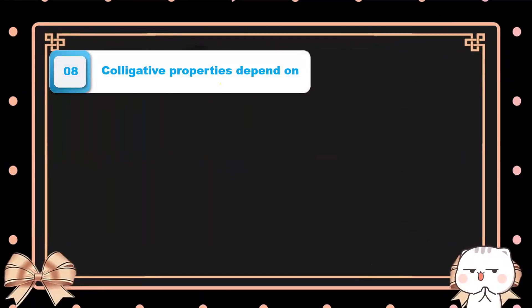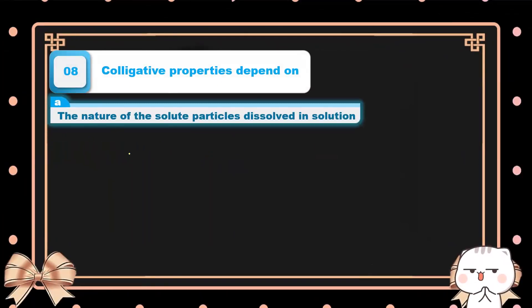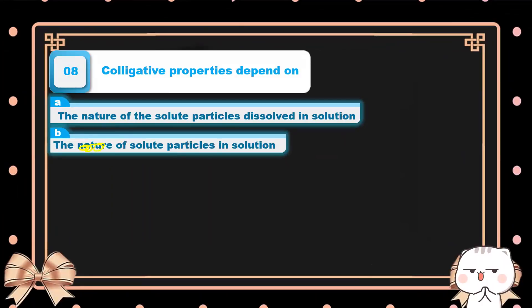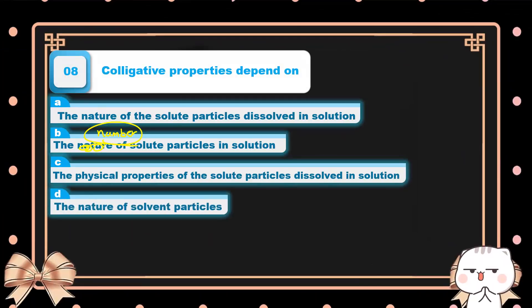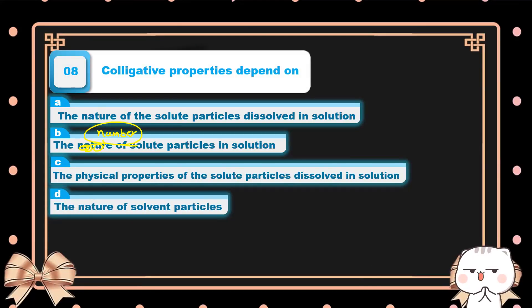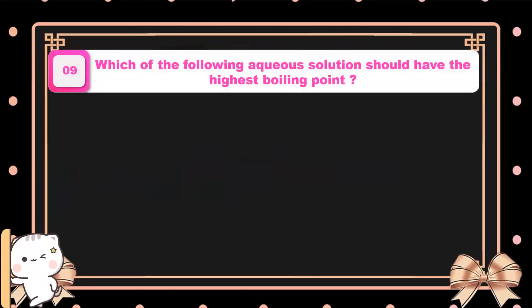Question number eight: colligative properties are properties which depend upon the number of solute particles present in a solution. It does not depend on what substance X or Y is, only on how many ions each produces. Option B is the correct answer.